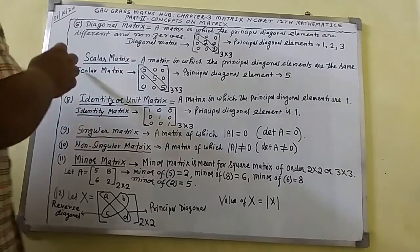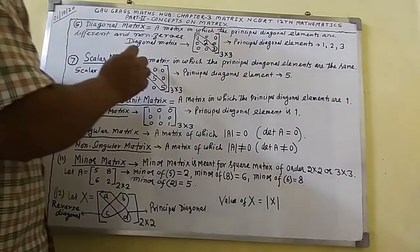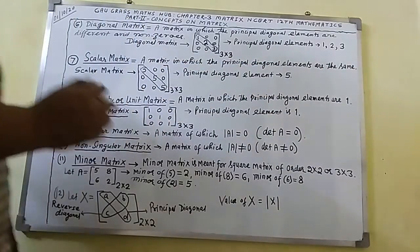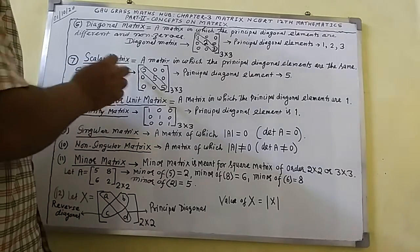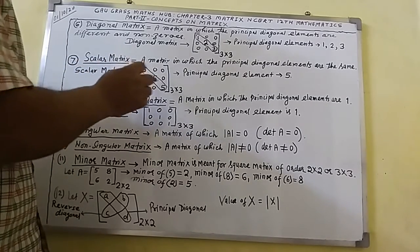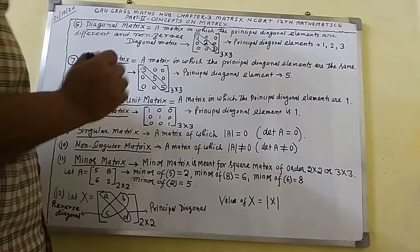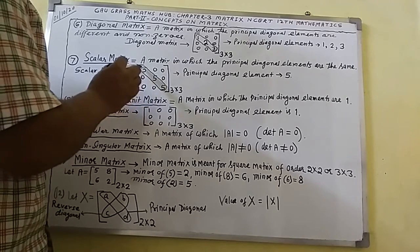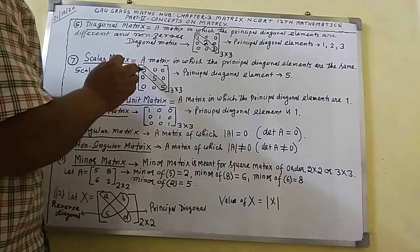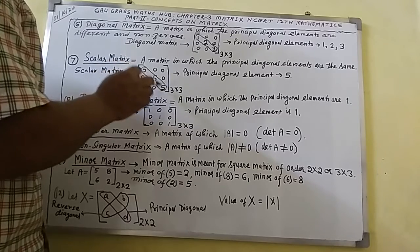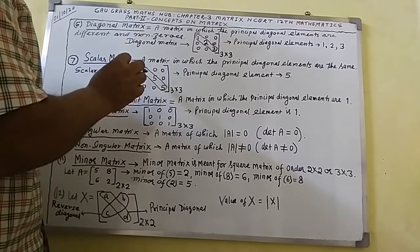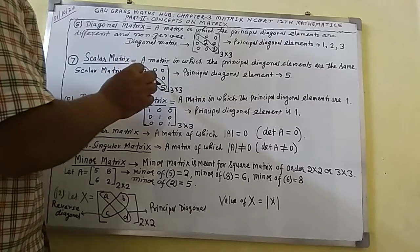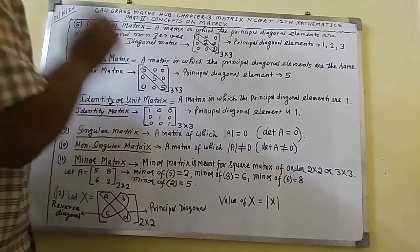Point number 7: scalar matrix. A scalar matrix is a matrix in which the principal diagonal elements are the same. Here you can see a matrix of order 3 by 3, in which the principal diagonal elements are all 5. Since all the elements of the principal diagonal are the same, this matrix is called a scalar matrix.